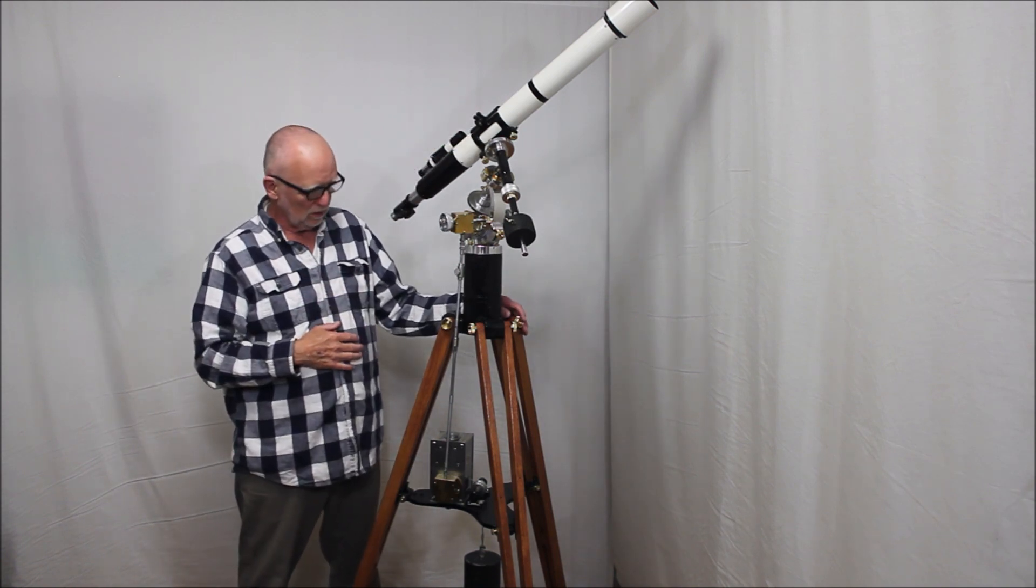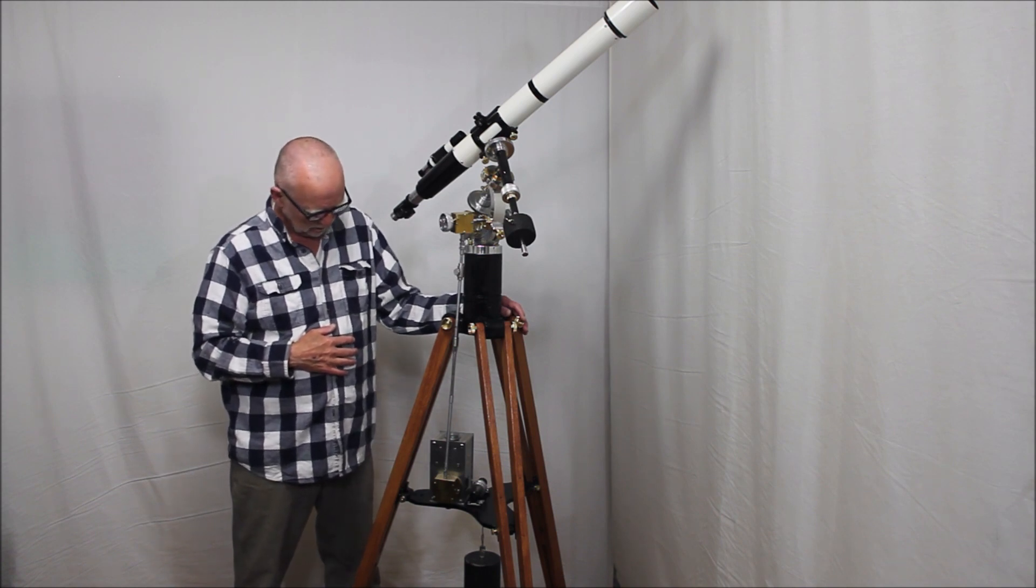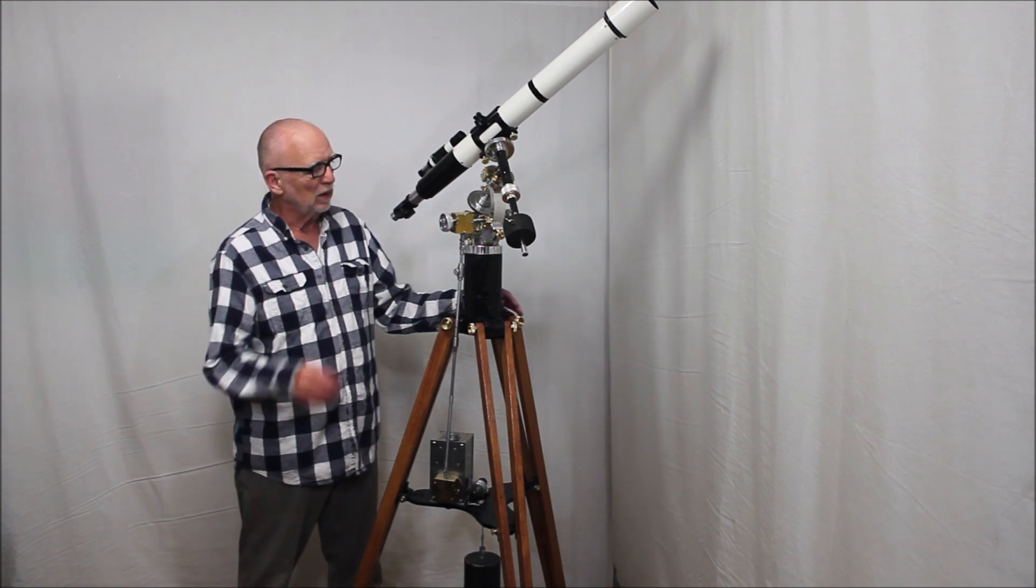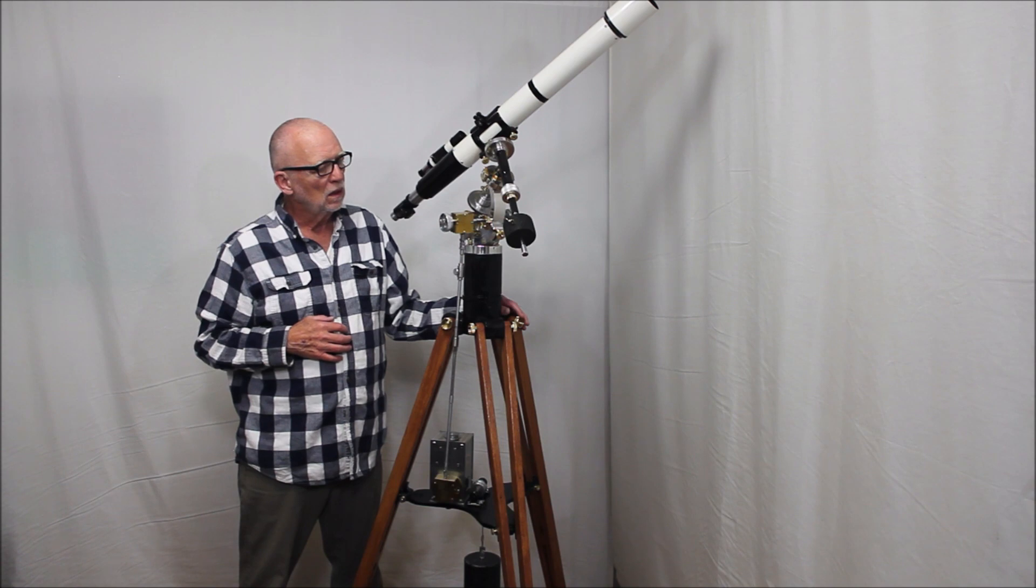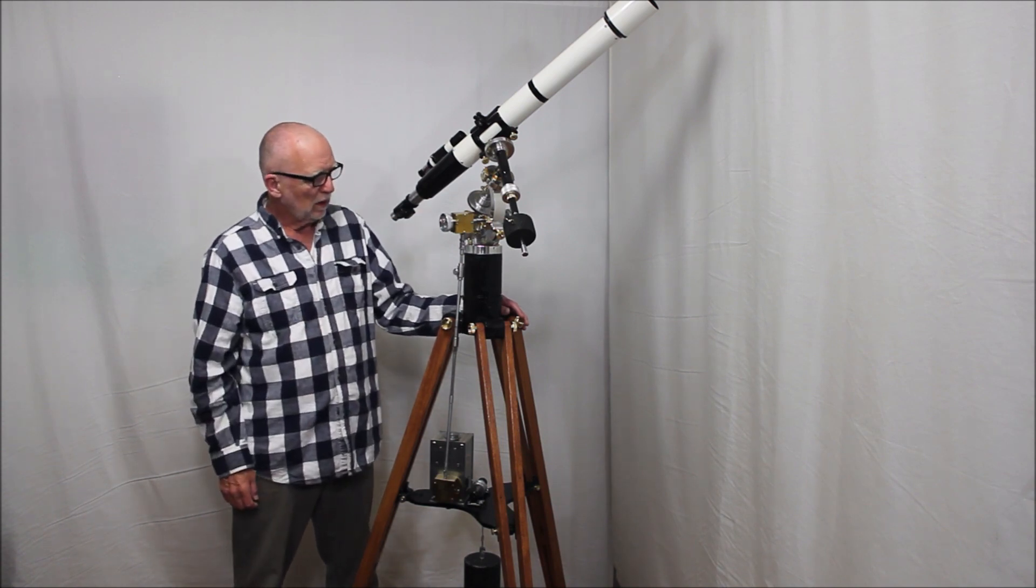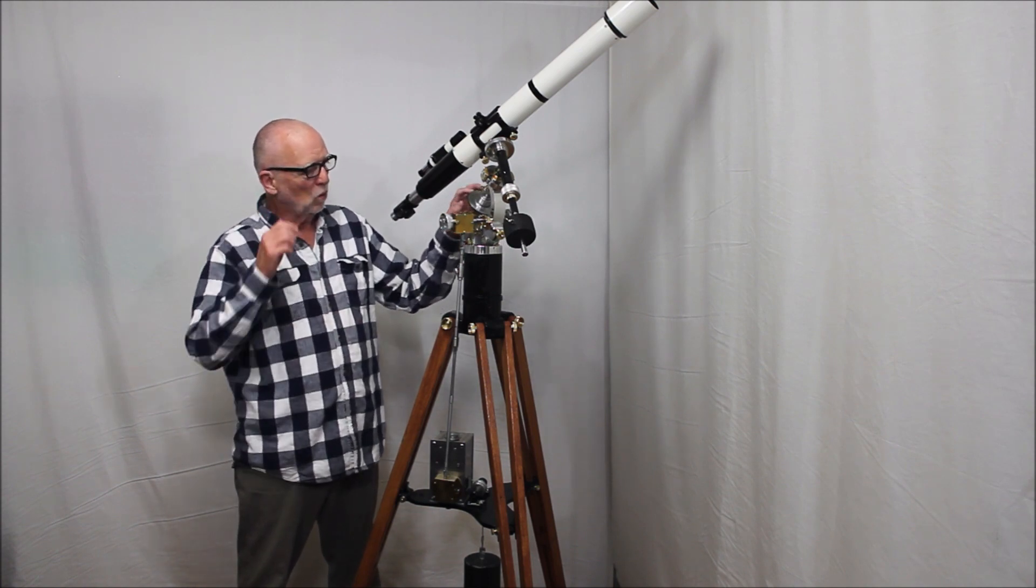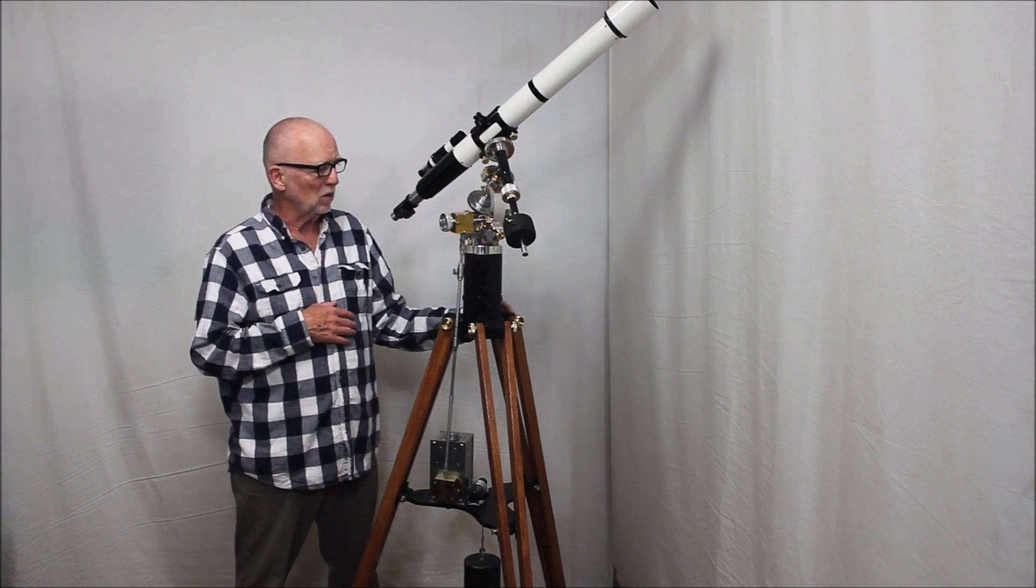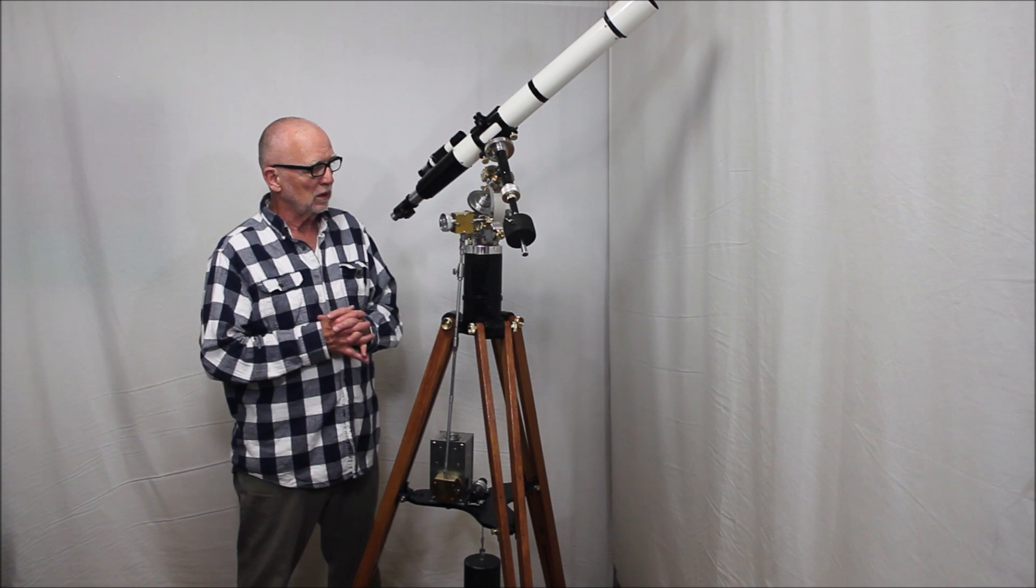There are some other unitron bits and pieces here. Most notably is the unitron clock drive, and if you keep your eye on this thing, you'll see that it's moving very slowly. Now this is actually a worm and worm wheel from a unitron 3 inch telescope, and the clock drive was designed to work with a 4 inch telescope.